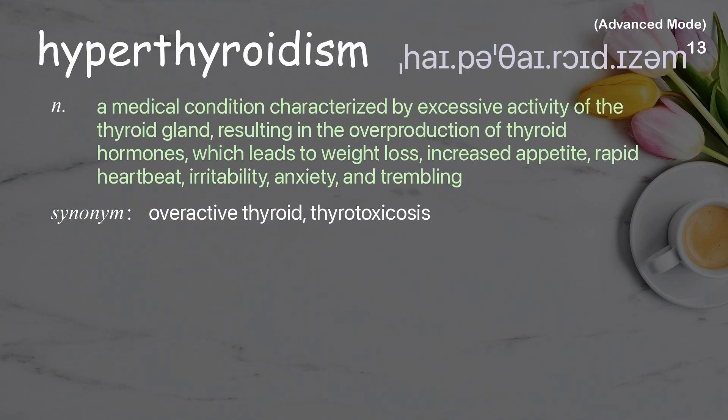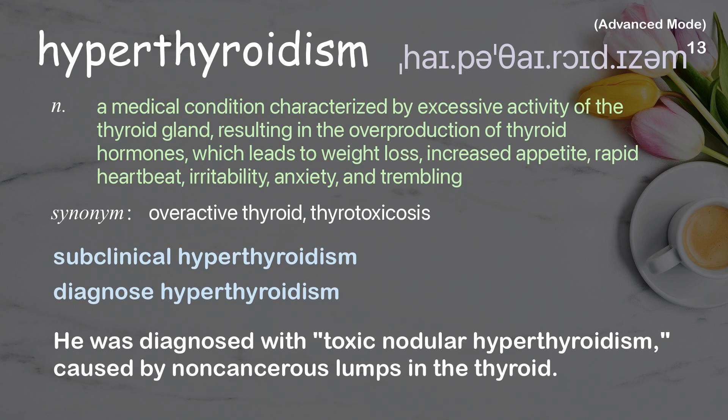Hypothyroidism. A medical condition characterized by excessive activity of the thyroid gland, resulting in the overproduction of thyroid hormones, which leads to weight loss, increased appetite, rapid heartbeat, irritability, anxiety, and trembling. Examples: Subclinical hyperthyroidism. Diagnose hyperthyroidism. He was diagnosed with toxic nodular hyperthyroidism, caused by non-cancerous lumps in the thyroid.